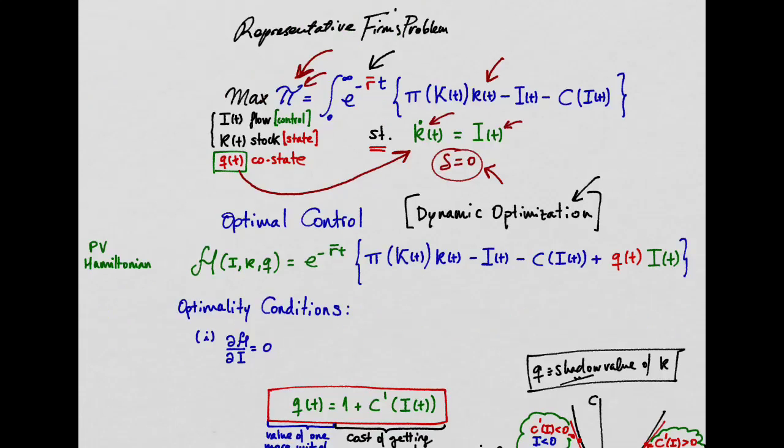The first step in this kind of problems is always to set up the present value Hamiltonian, which we define as this: discounted sum of the objective function, plus we introduce the equation of motion of the state variable, multiplied by some shadow value for the state variable.